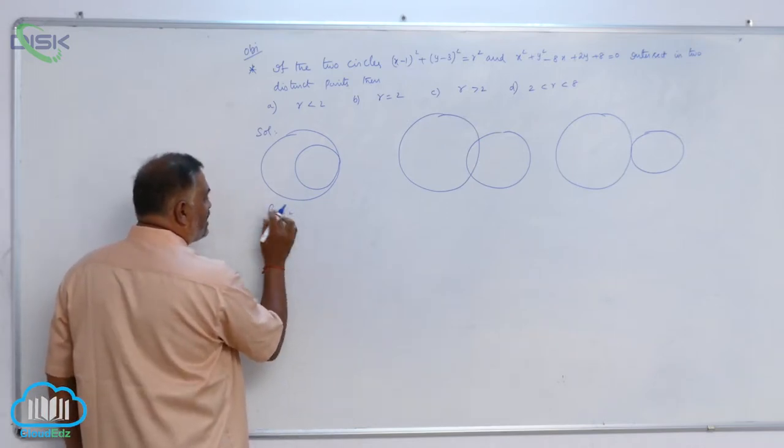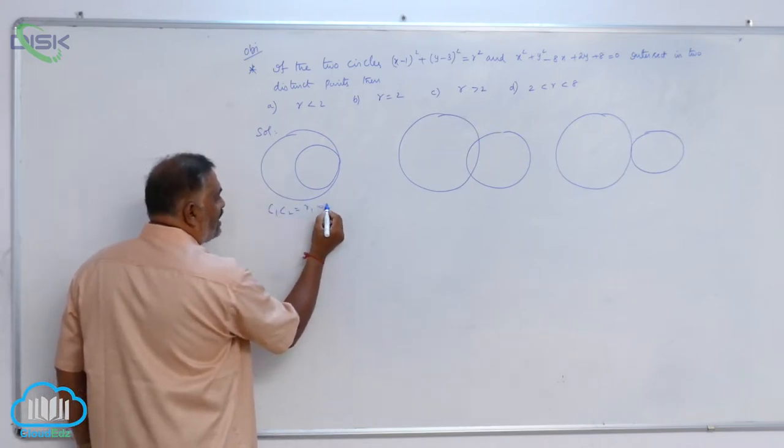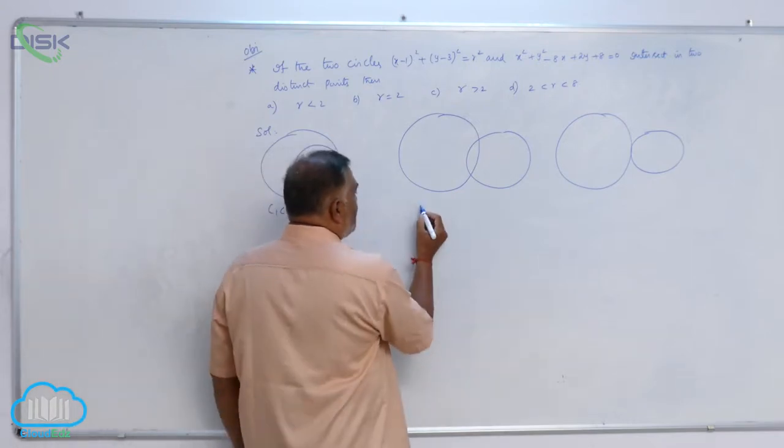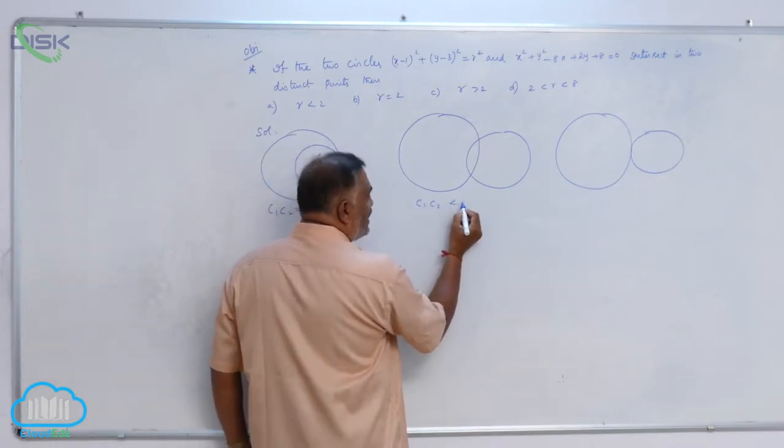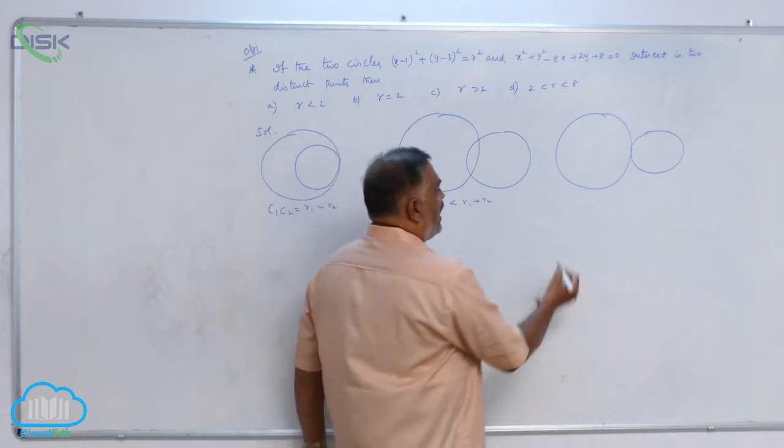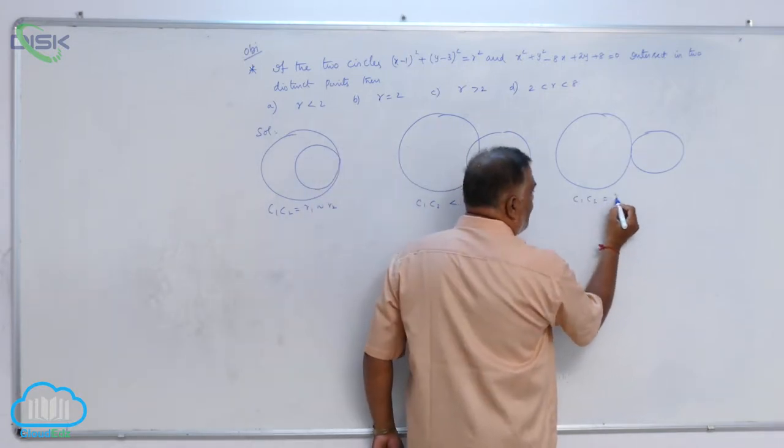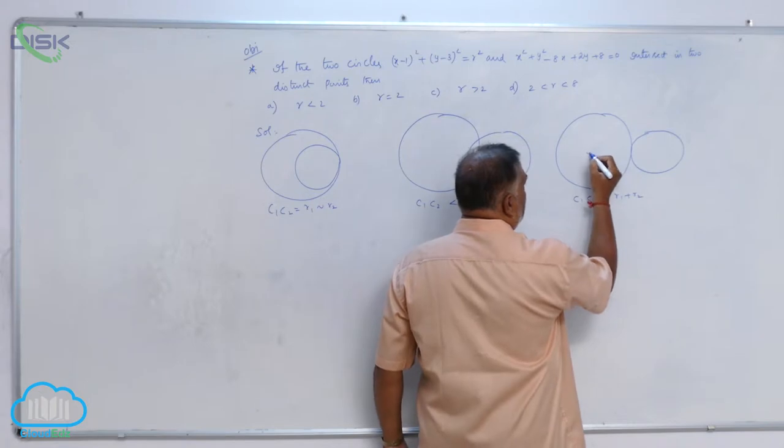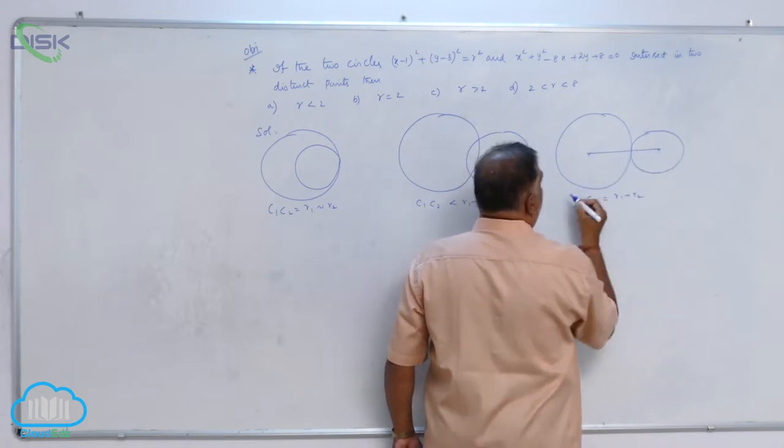C1C2 equals R1 minus R2 is this condition. C1C2 is less than R1 plus R2 for this condition, and C1C2 equals R1 plus R2. This is the condition.